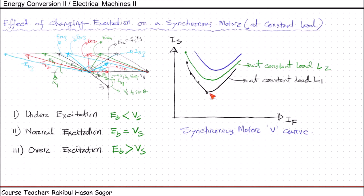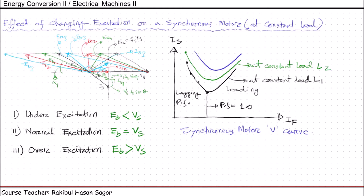Now for any particular load, you will get the minimum armature current, that is IS current, when the power factor is 1. So at this point, you will get the power factor equal to 1. The right side of this minimal current represents the leading power factor area, and the left side of this minimal current represents the lagging power factor area. So this is lagging power factor and this is the leading power factor.